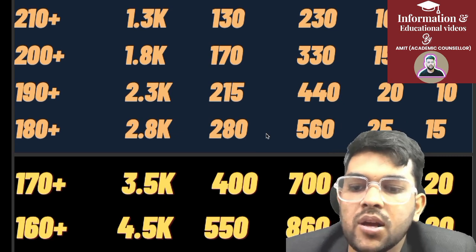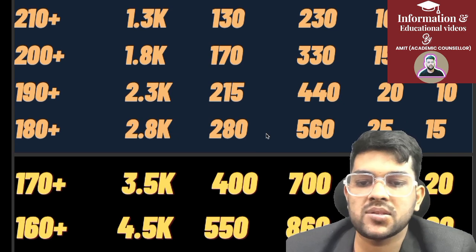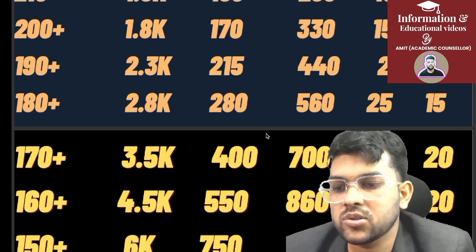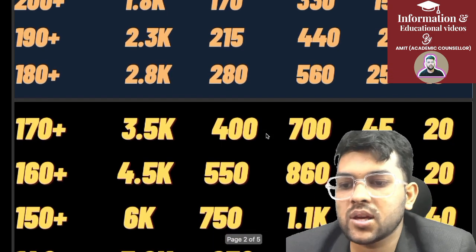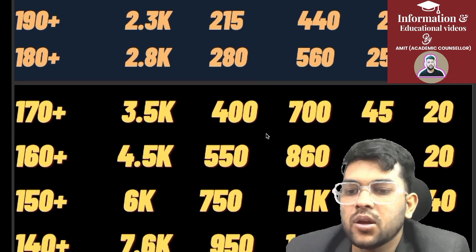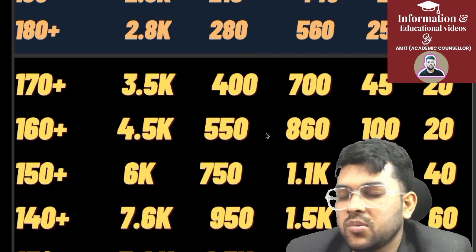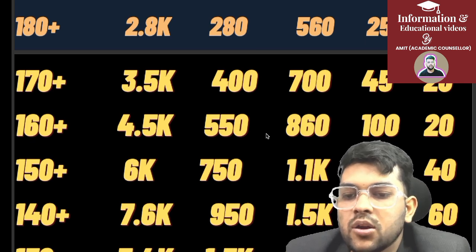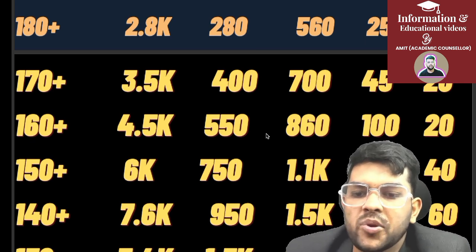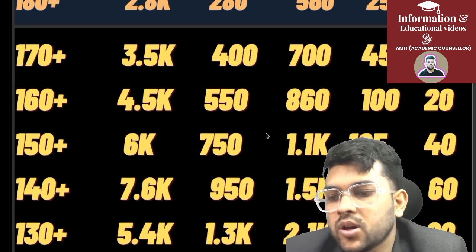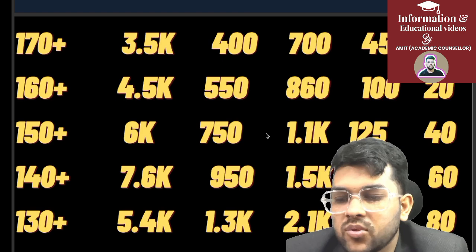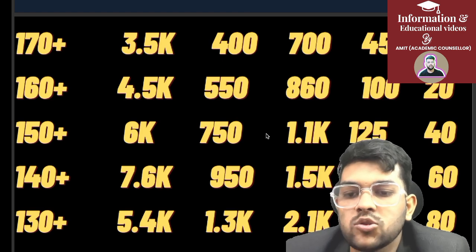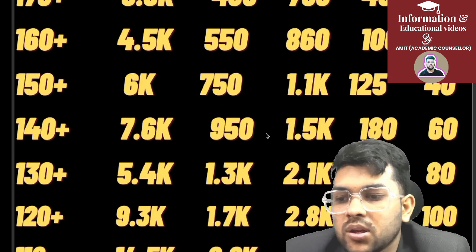For 170 marks: General rank 3,500, EWS 400, OBC 700, SC 45, ST 20. For 160+ marks: General 4,500, EWS 550, OBC 860, SC 100, ST 20. For 150 marks: General 6,000, EWS 750, OBC 1,100, SC 125, ST 40. For 140+ marks: General 7,600, EWS 950, OBC 1,500, SC 180, ST 60.